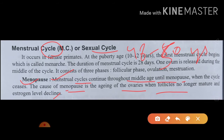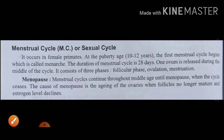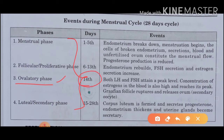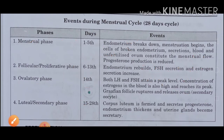Now we discuss the different phases and events of the menstrual cycle. There are four events in the menstrual cycle, with the ovulatory phase occurring on the 14th day. The first phase is the menstrual phase, also known as the bleeding phase, lasting from day one to day five, during which vaginal blood flow occurs, called menstrual flow.